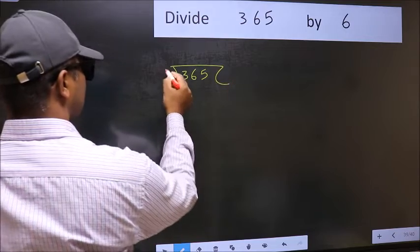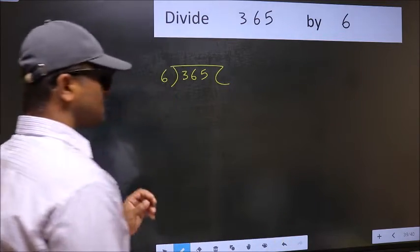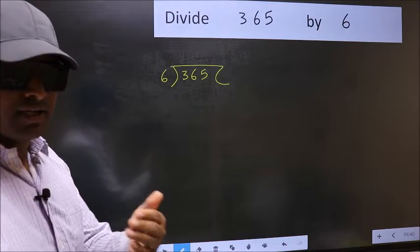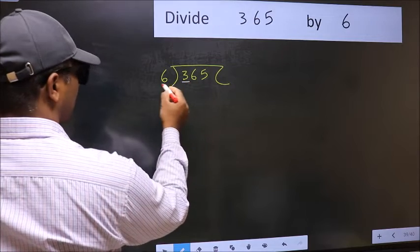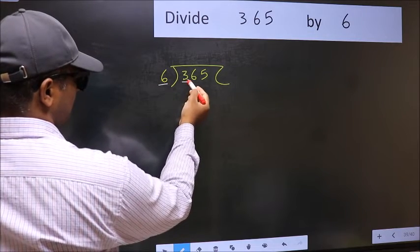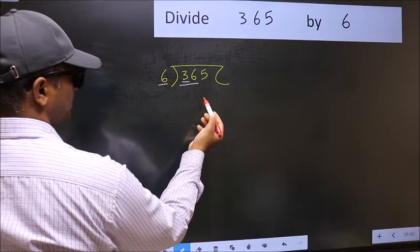365, 6 here. This is your step 1. Next, here we have 3 and here 6. 3 is smaller than 6, so we should take two numbers, 36.